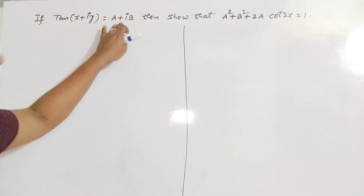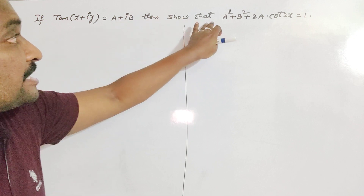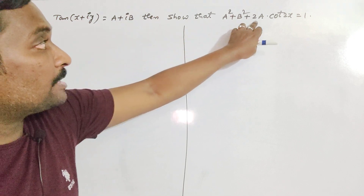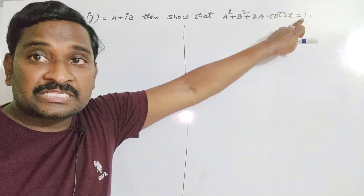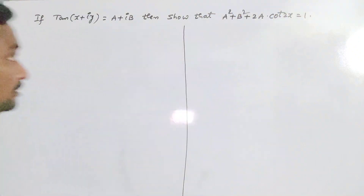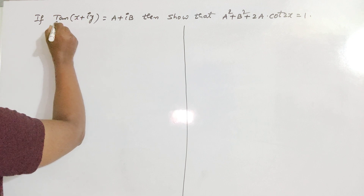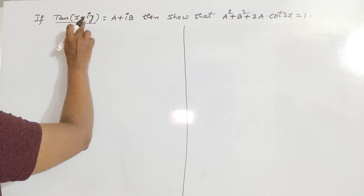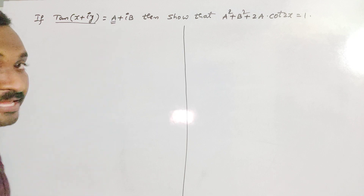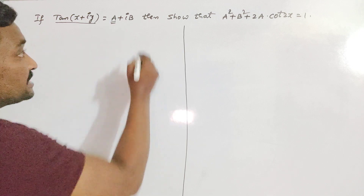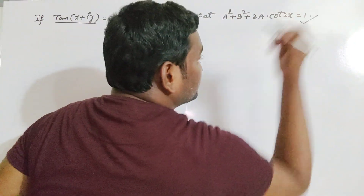If tan of (x + iy) is equal to (a + ib), then we have to show that a² + b² + 2a·cot(2x) = 1. In the complex trigonometric function tan(x + iy), the real part is capital A and the imaginary part is represented by capital B. Then we have to prove this result.